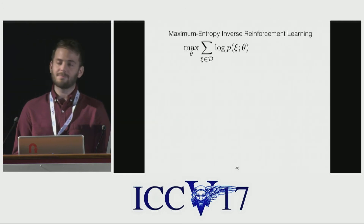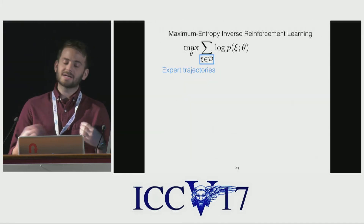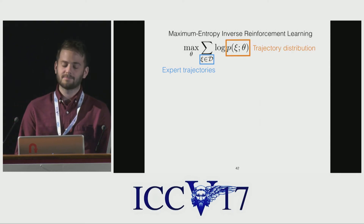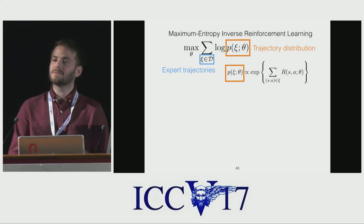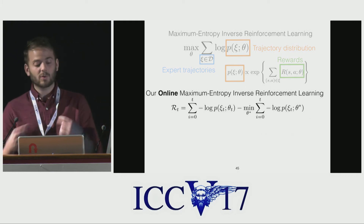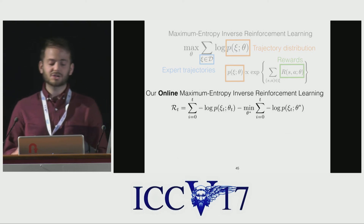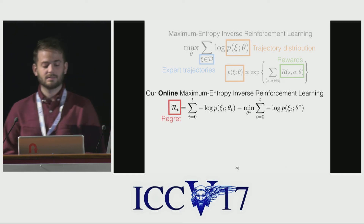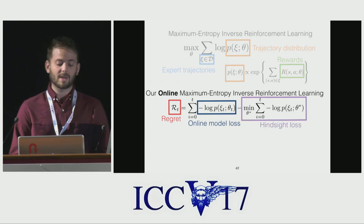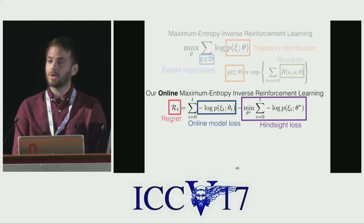We use the framework of maximum entropy inverse reinforcement learning as the basis of our approach. In this framework, trajectories from a dataset of demonstrations are used to maximize the likelihood of a trajectory distribution P, which is a Gibbs distribution defined in terms of a parameterized reward function. We want to forecast and accumulate demonstrations continuously. In online learning theory, regret measures the difference between the loss of an online learner and the hindsight loss of a batch learner. A small regret means the online learner performed well with respect to a learner trained on all of the data at once.